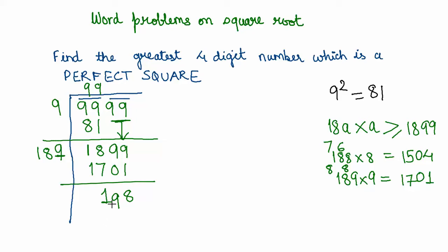What this tells us is if I subtract 198 from this number, I would get the greatest four-digit square number. Our new number, the greatest four-digit number, is going to be 9999 minus 198, which gives us 9801.